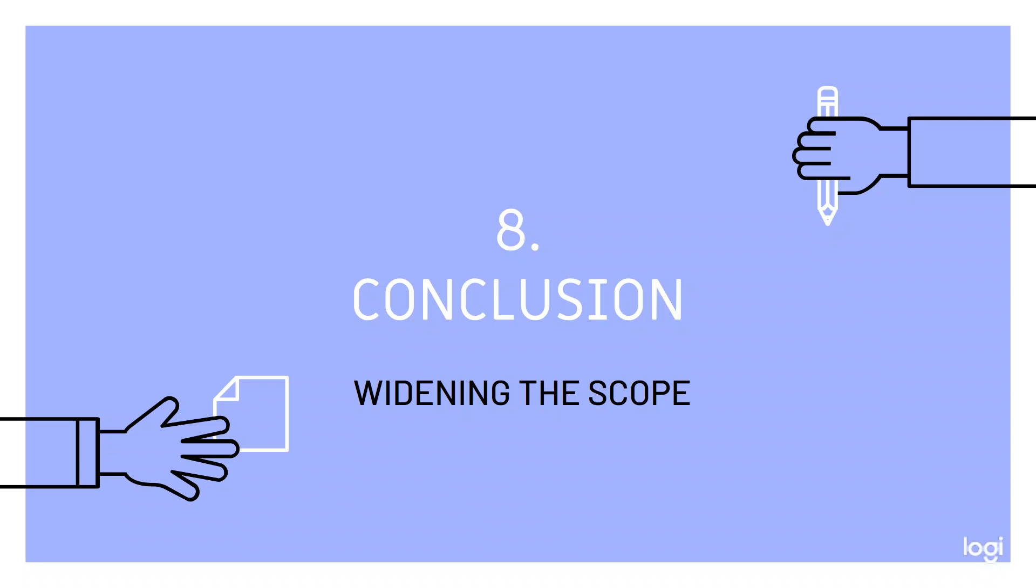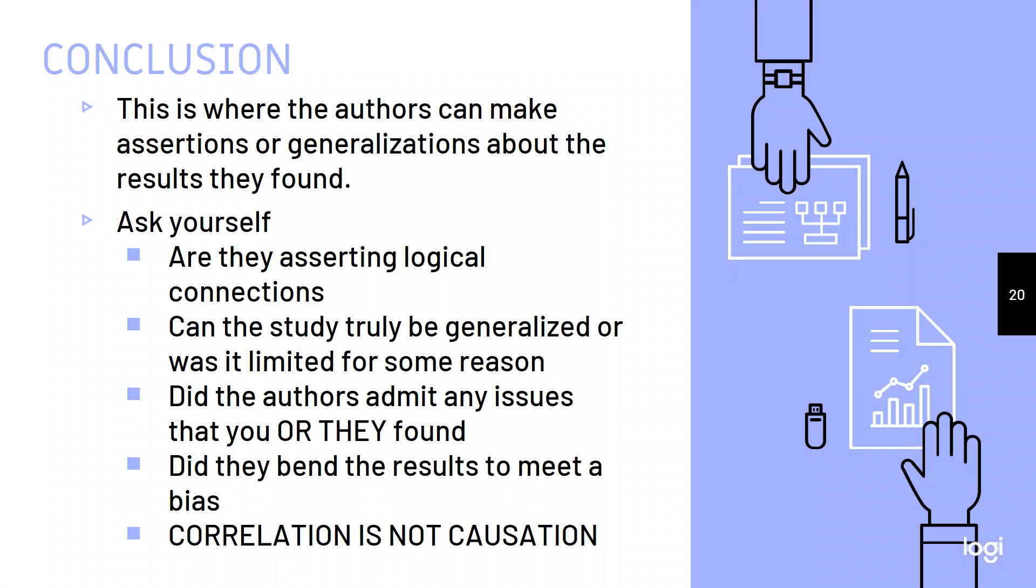Finally, there's a conclusion. And in the conclusion, we widen the scope. So this is where authors can make assertions or generalizations about the results they found, right? So it could be something like, we saw this happen in this population. We think it can happen in other populations because of A, Y, and Z. That's what I mean by generalizations. So when you're reading the conclusion section, you want to ask yourself, are they asserting logical connections? Can the study be truly generalized or is it limited for some reason?